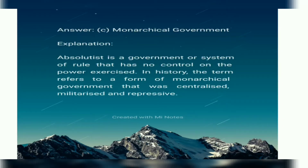The correct answer is Option C: Monarchical government. Explanation: Absolutist refers to a government or system of rule that has no controls on the power exercised. In history, the term refers to a form of monarchical government that was centralized, militarized, and repressive.